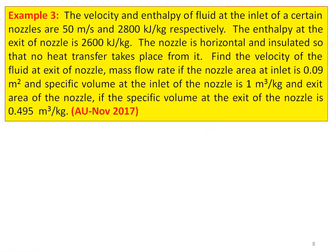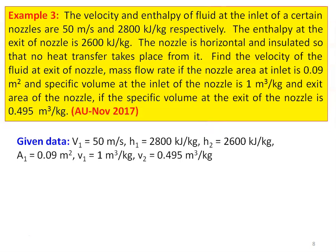Example number 3: The velocity and enthalpy of a fluid at the inlet of a nozzle are 50 m/s and 2800 kJ/kg respectively. The enthalpy at the exit of the nozzle is 2600 kJ/kg. The nozzle is horizontal and insulated, so no heat transfer takes place. Find the exit velocity, mass flow rate, and exit area given inlet area = 0.09 m², specific volume at inlet = 1 m³/kg, and specific volume at exit = 0.495 m³/kg.